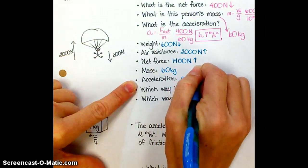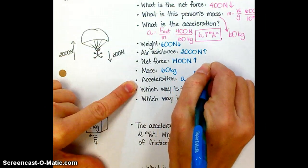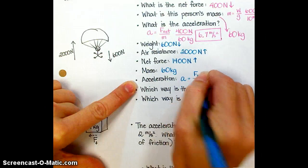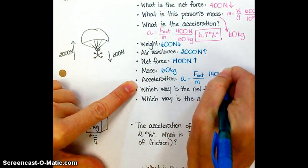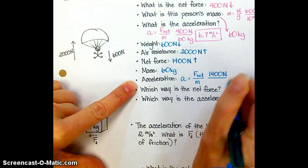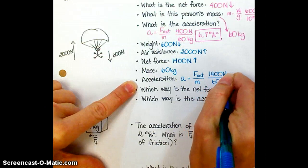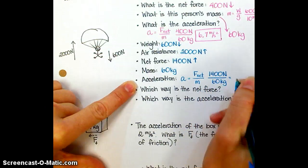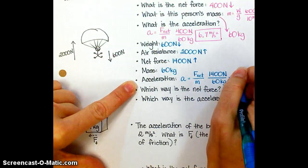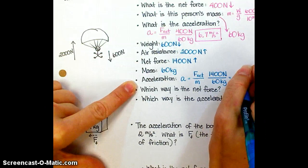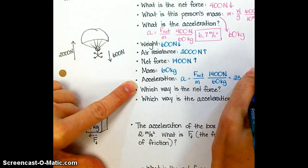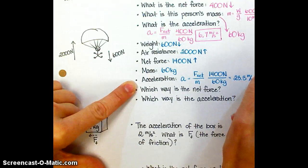And then we need to calculate acceleration. Acceleration, again, is net force divided by mass. Net force is 1,400 newtons divided by 60 kilograms. And if I trust the calculation of one of my students earlier, that should come out to 23.3 meters per second squared.